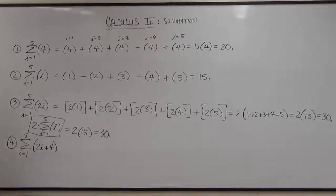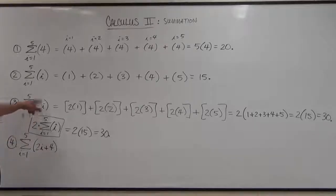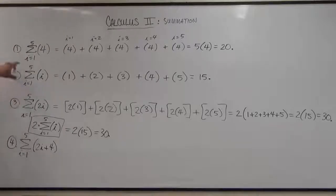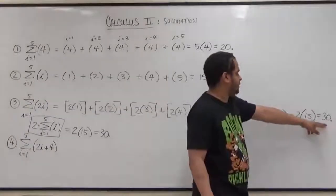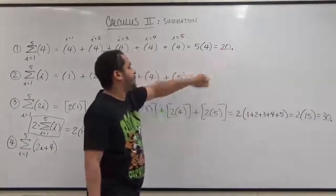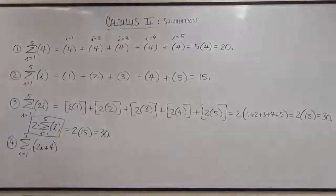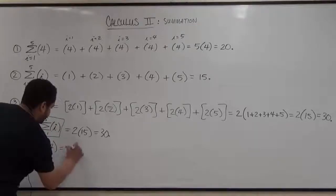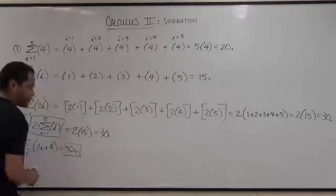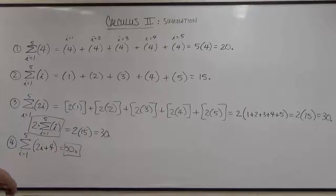So now let's move on to number 4. Problem 4 is a combination of 2i and 4. We have the same summation limits from 1 to 5, and we're taking the summation of 2i plus the summation of 4. The summation of 2i is 30 and the summation of 4 from 1 to 5 is 20, so 20 plus 30 gives us 50. Let's get to the work of this.